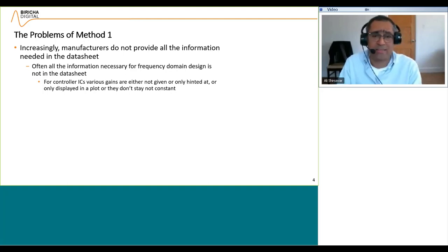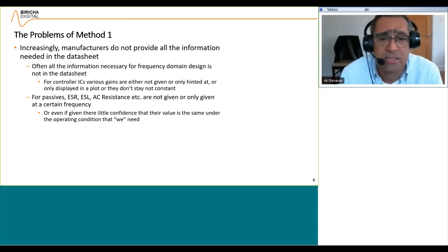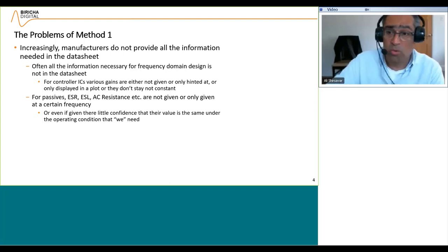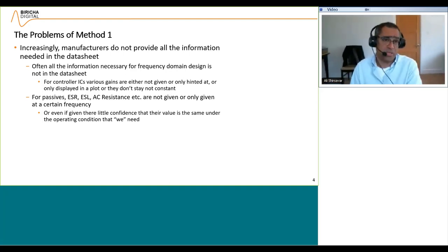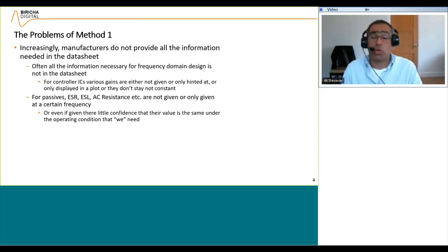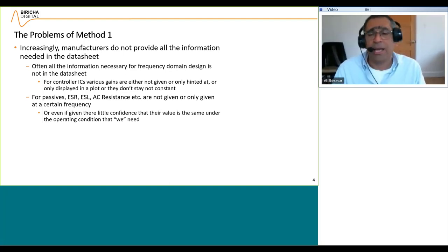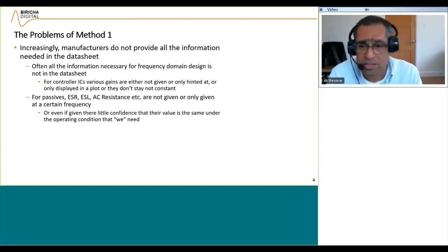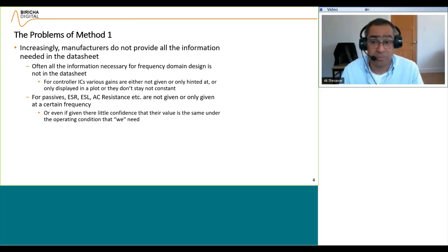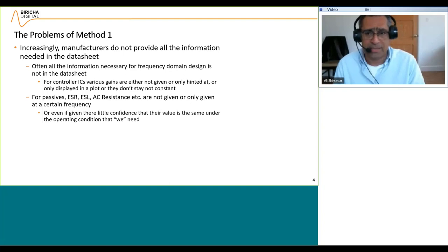Again your maths is off. For passives, ESR, ESL, and AC resistance are either not given at all, or if given, only at a certain frequency. In the case of ESR, you need to measure it at the crossover frequency for loop stability, but in the datasheet it's often given at 100 kHz — that seems to be a magic number. However, many manufacturers now provide simulation tools and web interfaces to help work out some of these parameters.